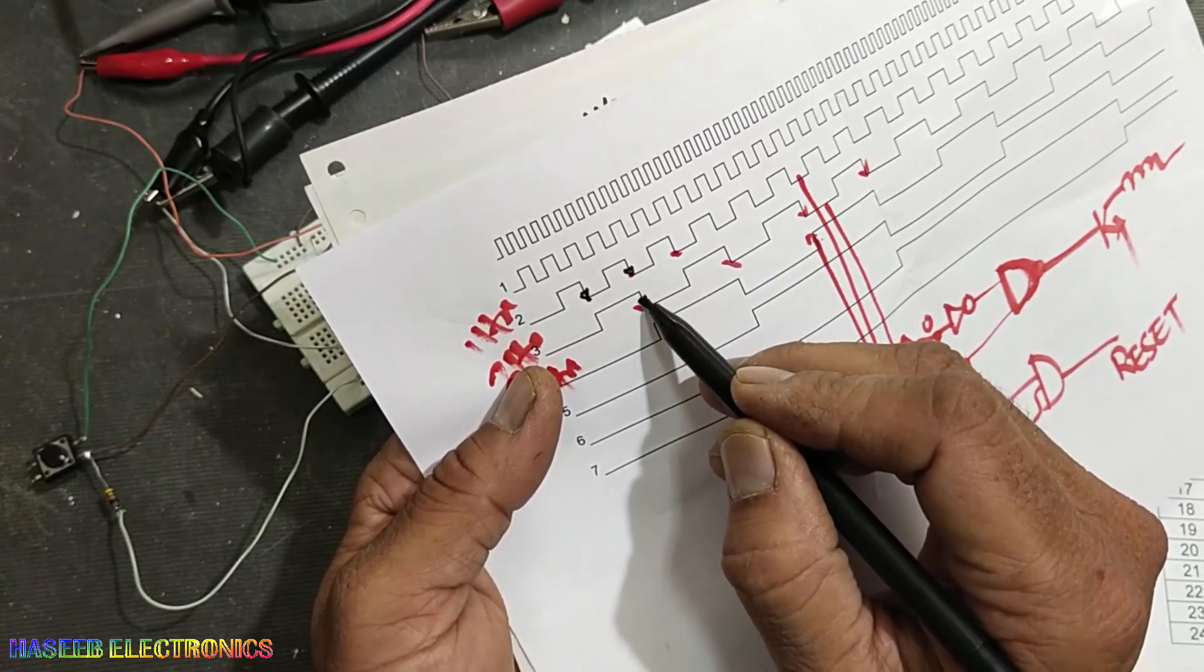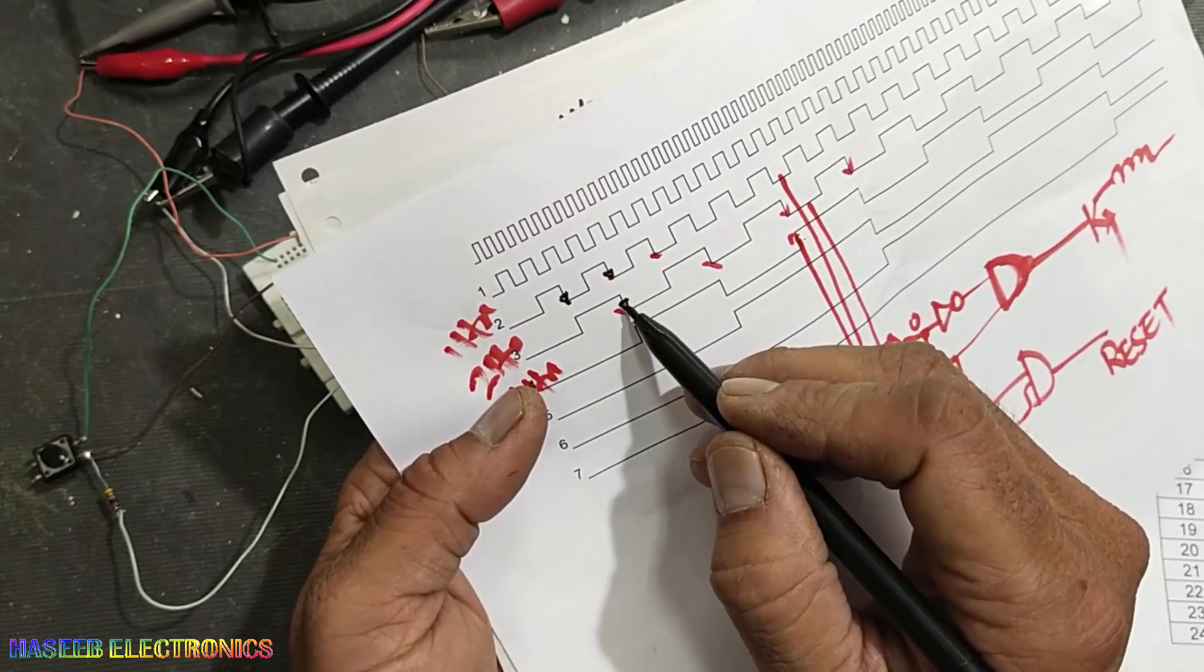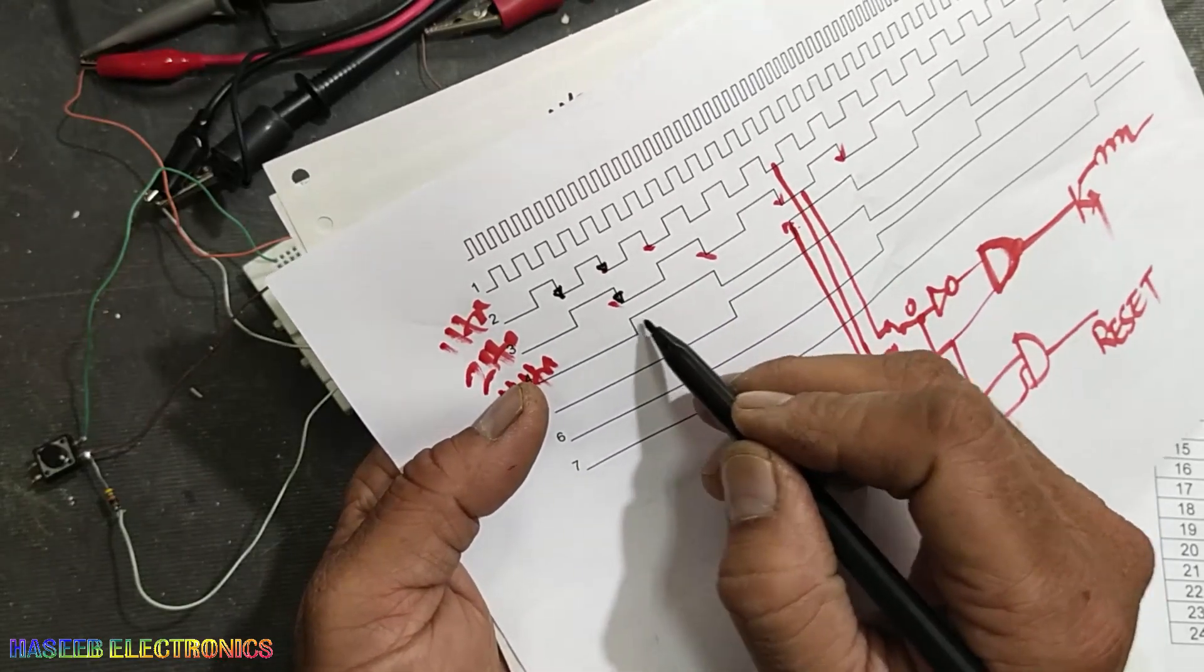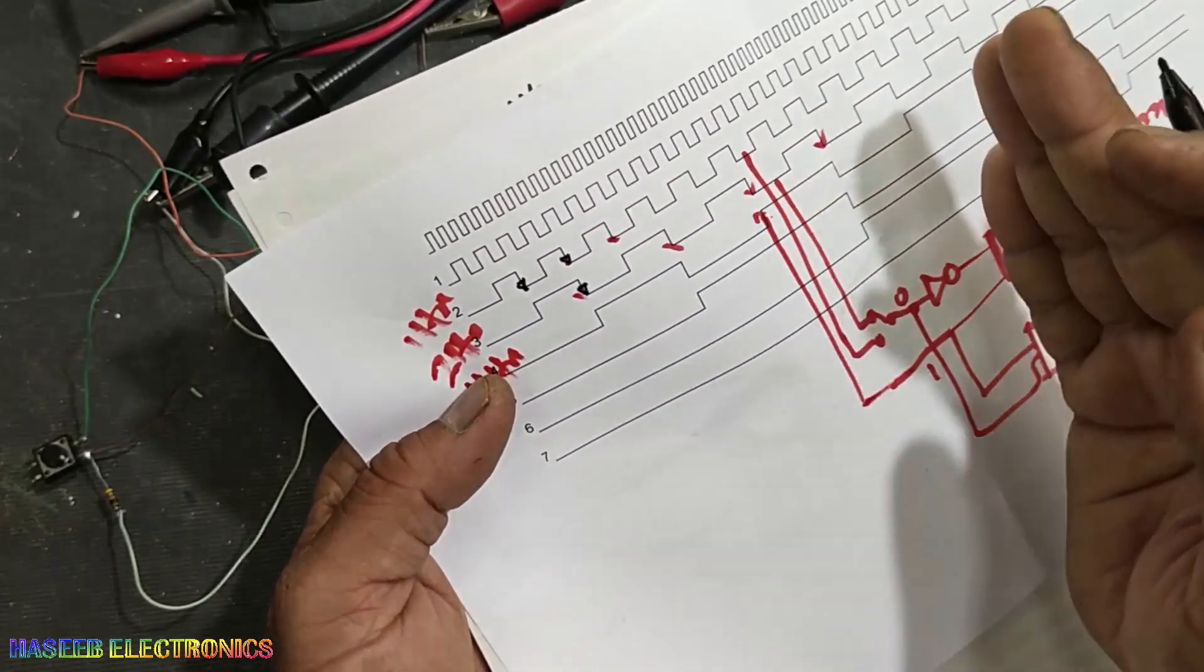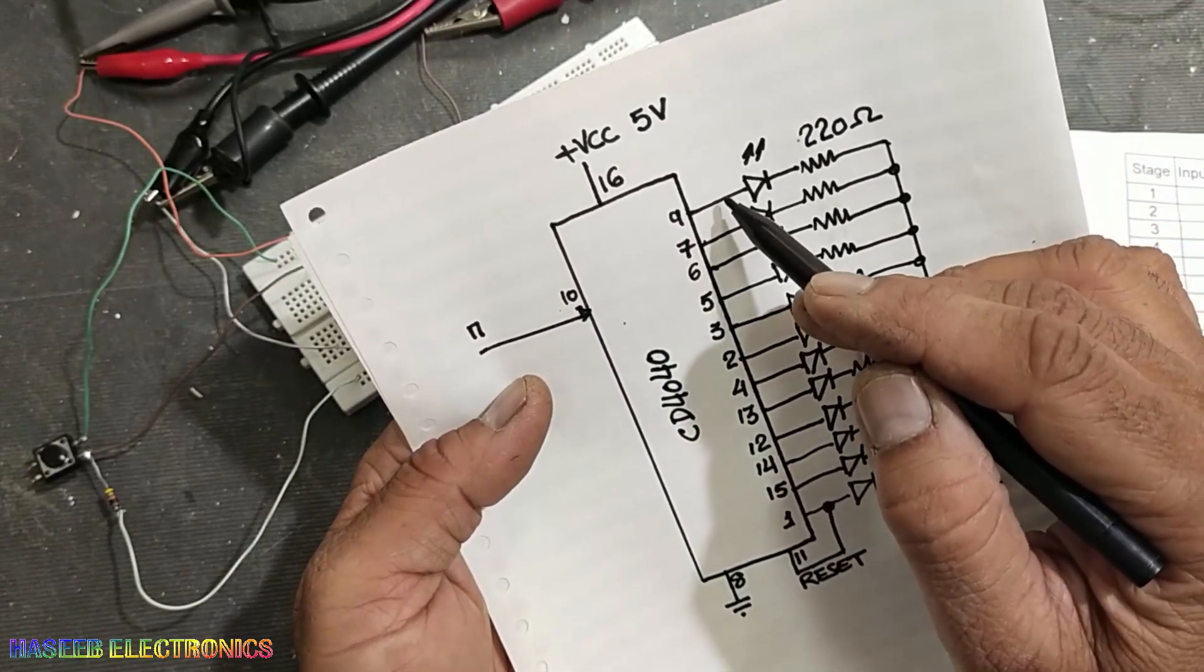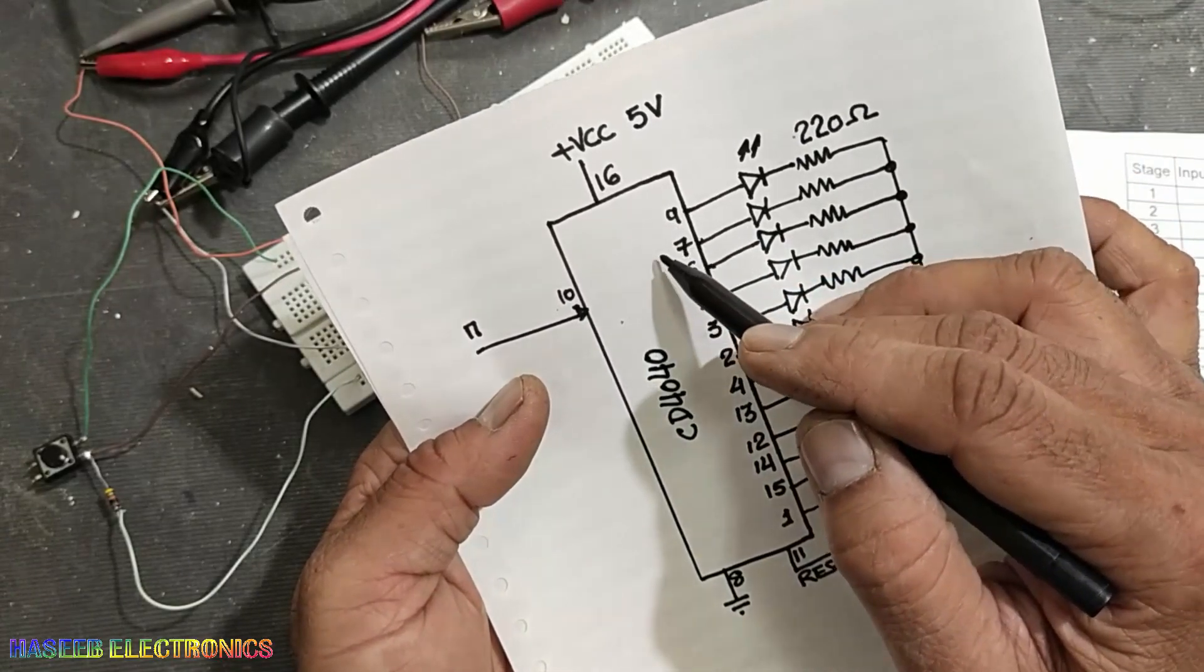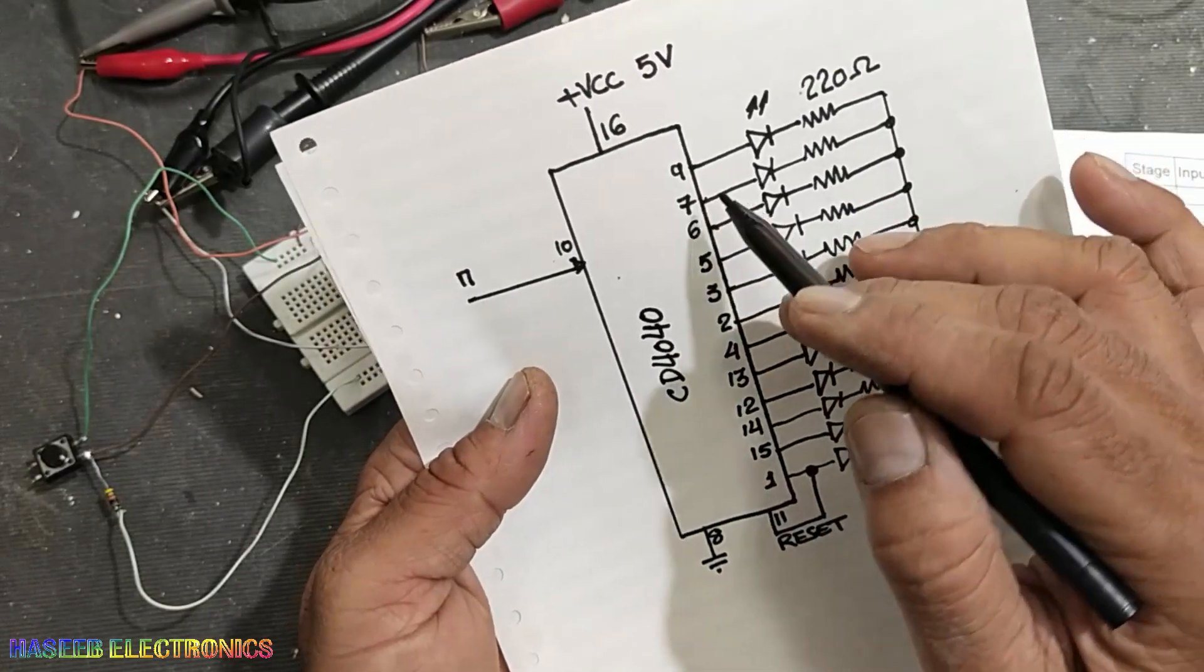When it's going to trailing edge, high to low, it will switch the next stage. So each stage is interlaced with the second one. If here is the input, this is the output, and this output becomes input for the next stage. It is Q2, Q1, Q2.